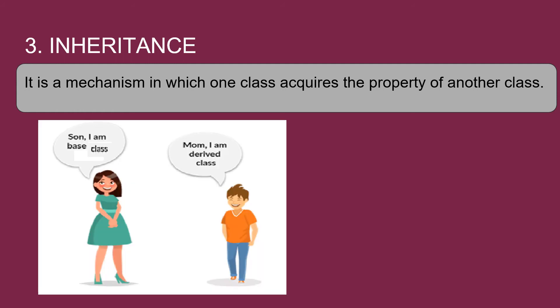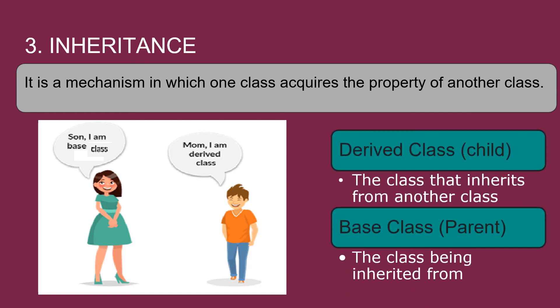Inheritance. It is a mechanism in which one class acquires the property of another class. A child inherits the trait of his or her parents. There are two types of classes: Derived class and base class. The derived class is the class which inherits from another class. And base class is the class being inherited from.